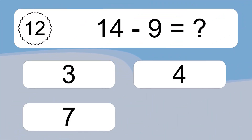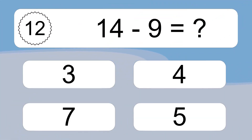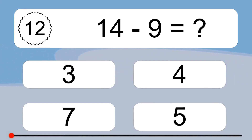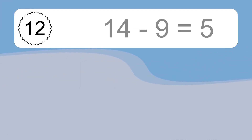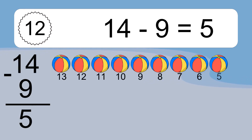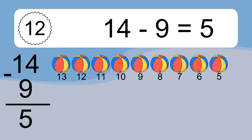14 minus 9 equals what? 14 minus 9 equals 5. Let's count it: 13, 12, 11, 10, 9, 8, 7, 6, 5.